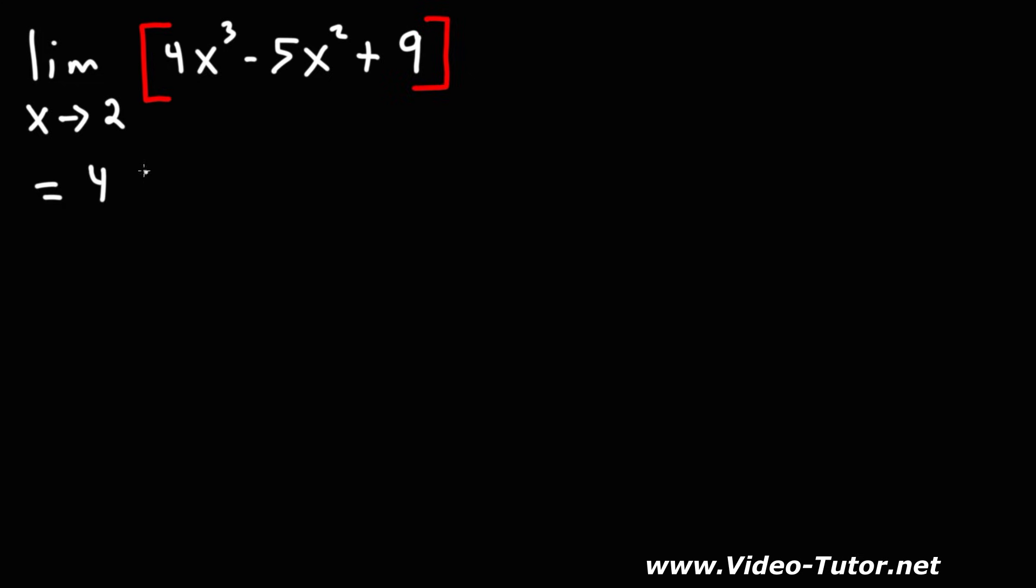So this is going to be 4 times the limit as x approaches 2 of the variable x cubed, and then minus 5 times the limit as x approaches 2, this is of x squared, plus the limit as x approaches 2, so the constant 9.